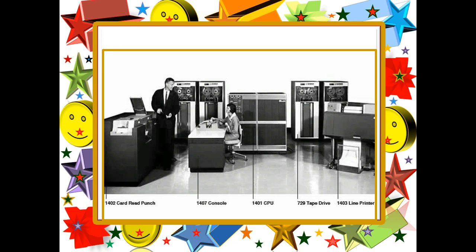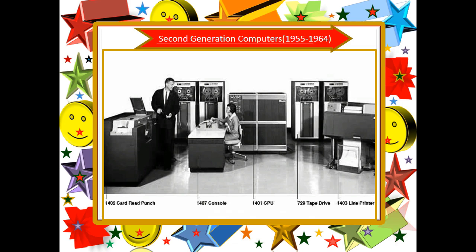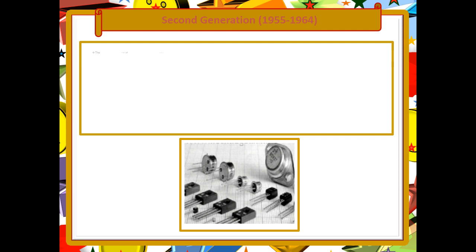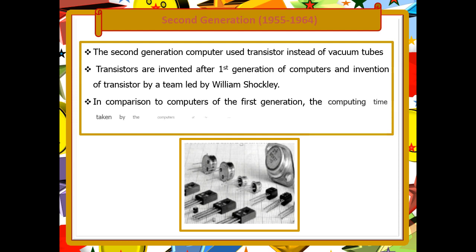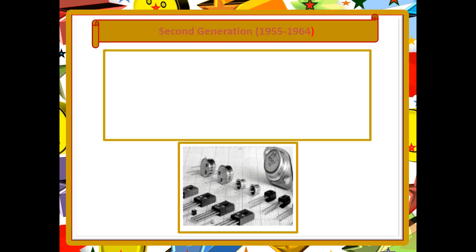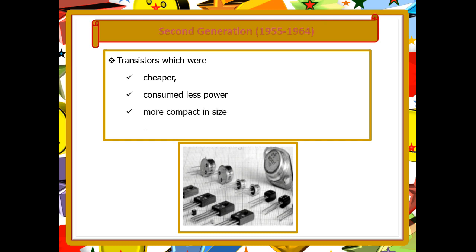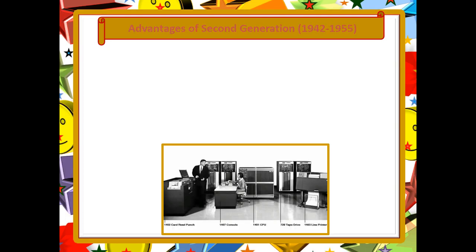Now let us talk about second generation computers. Second generation computers ran from 1955 to 1964. In second generation computers, we used transistors instead of vacuum tubes. These transistors were invented after the first generation of computers by a team led by William Shockley. The computing time taken by second generation computers was lesser, and the transistors used were very cheap, consumed less power, and were more compact in size.